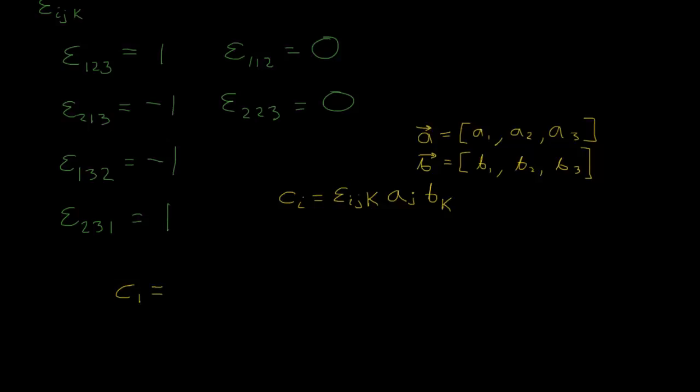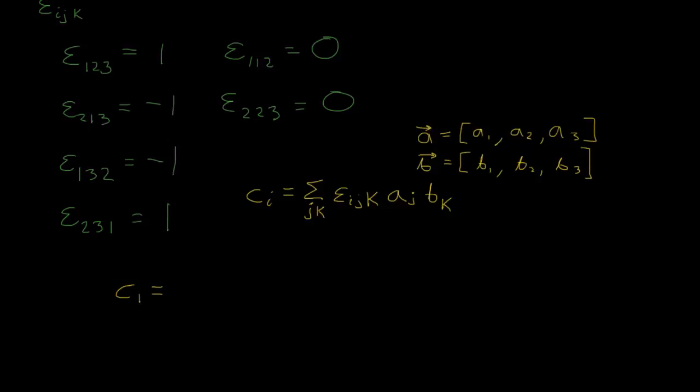Note that I skipped writing a summation sign explicitly. As mentioned in the last video, when an index appears more than once it's implied you're summing over it — Einstein summation convention. So C_i equals the sum over j and k of epsilon_ijk times A_j times B_k, since j and k both appear twice.